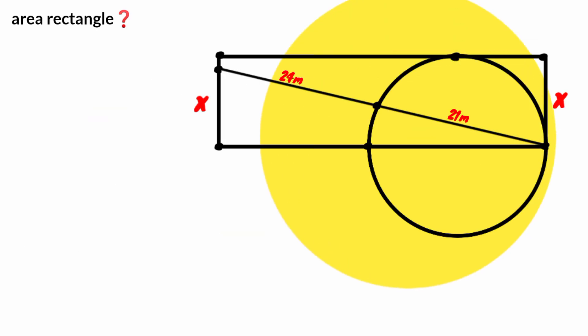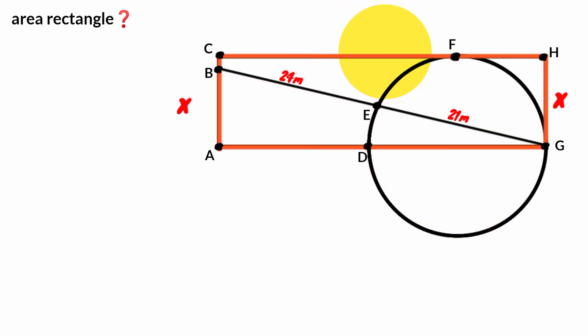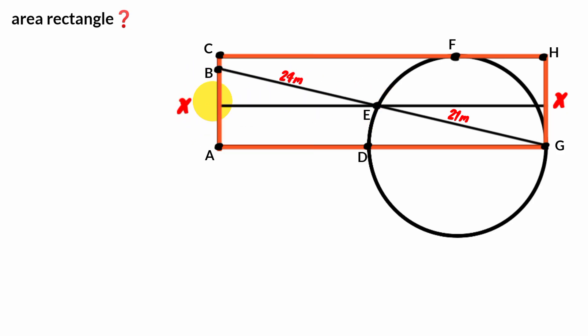How can we calculate the area of the rectangle? Come here — construct a line parallel to this side, passing through point E. For this line, let this point be P and this Q. For this rectangle, we know all angles of a rectangle are 90 degrees each.